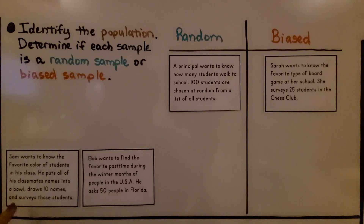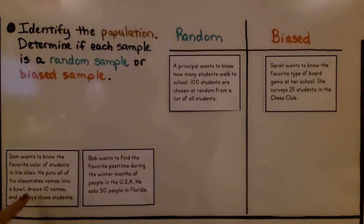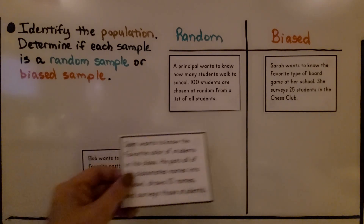This one says: Sam wants to know the favorite color of students in his class. He puts all of his classmates' names into a bowl, draws 10 names, and surveys those students. Is that biased or random? Every student in the class had a chance to be picked because he just picked names out of a bowl. So this would be random.